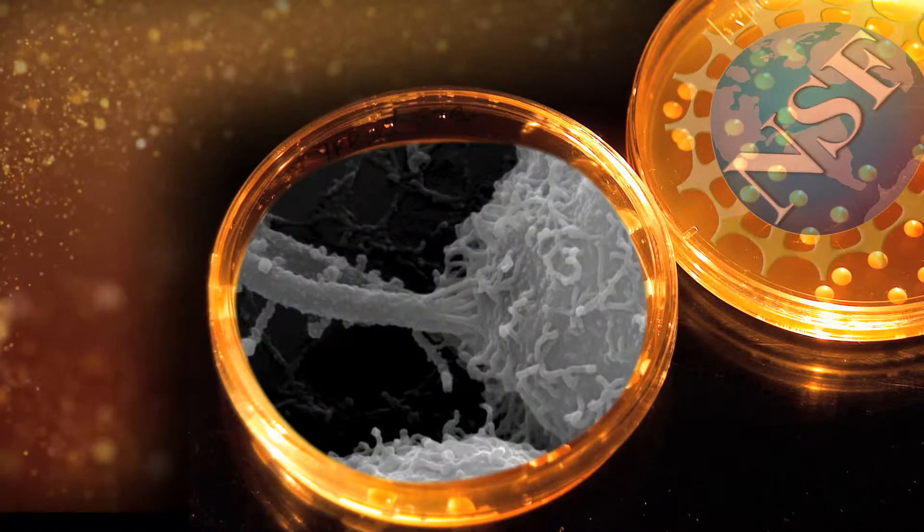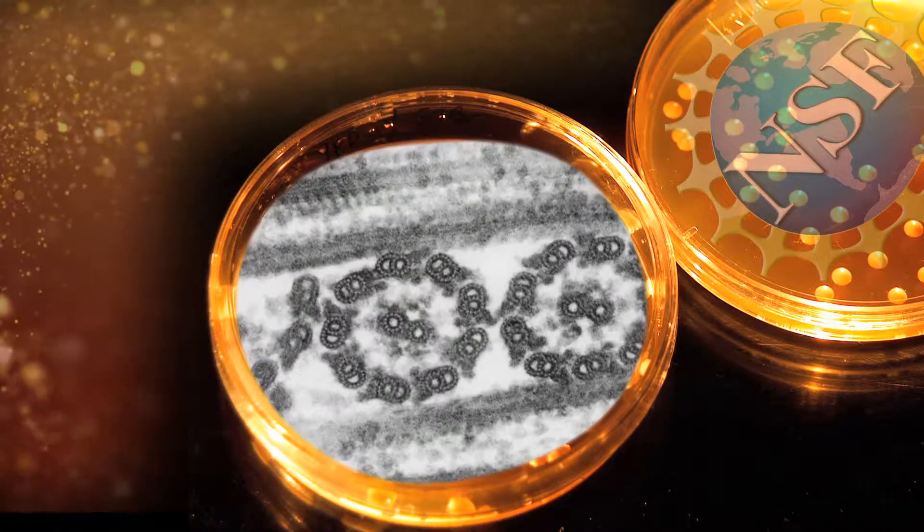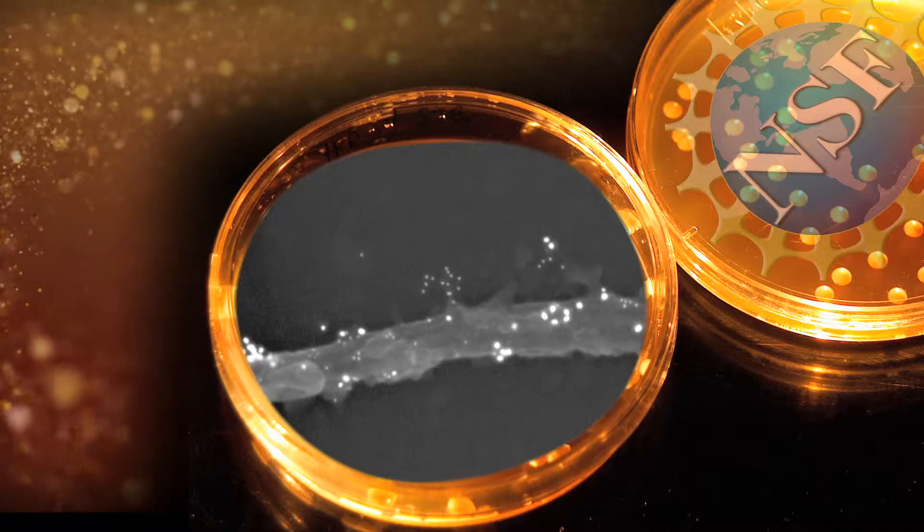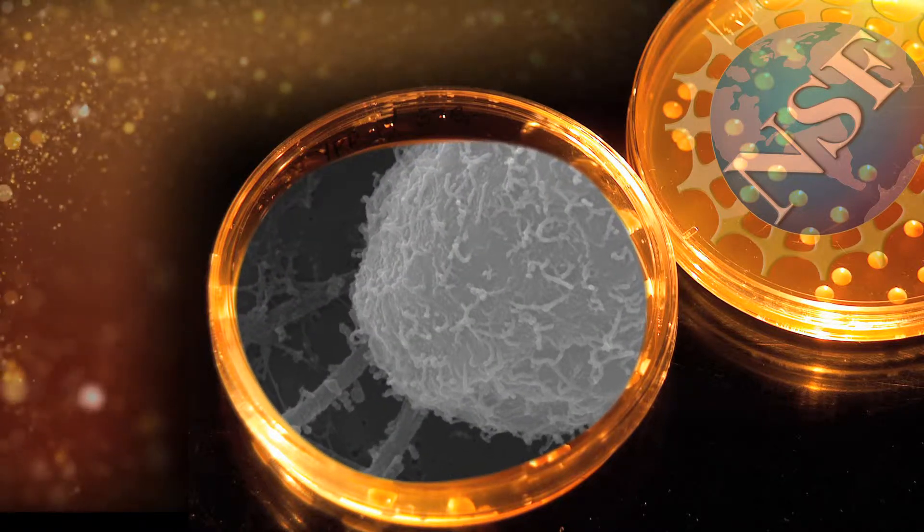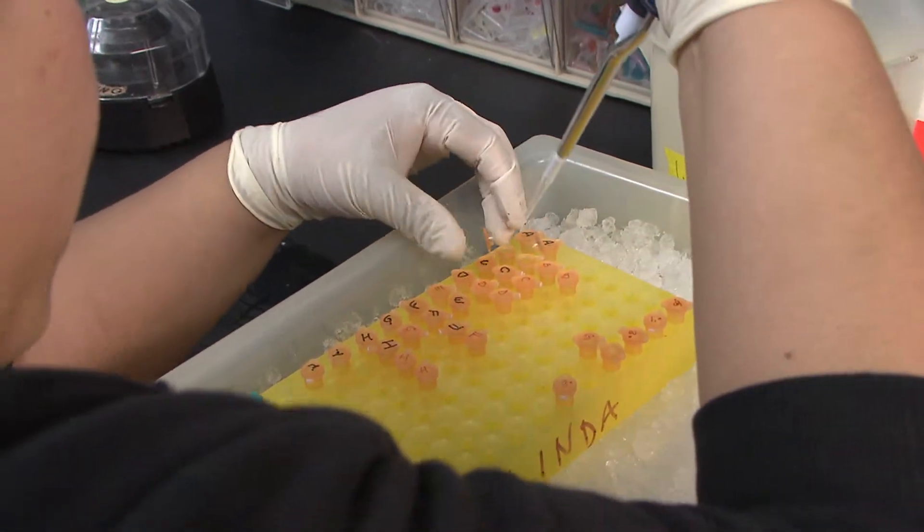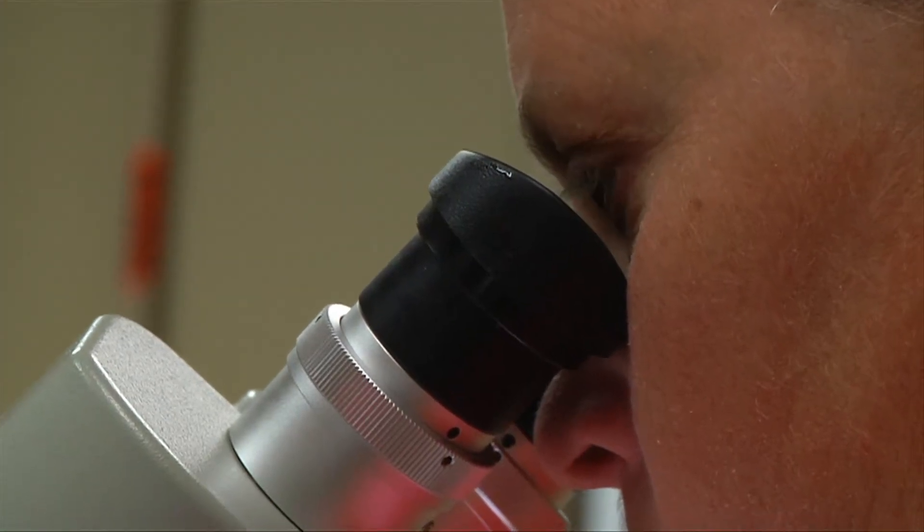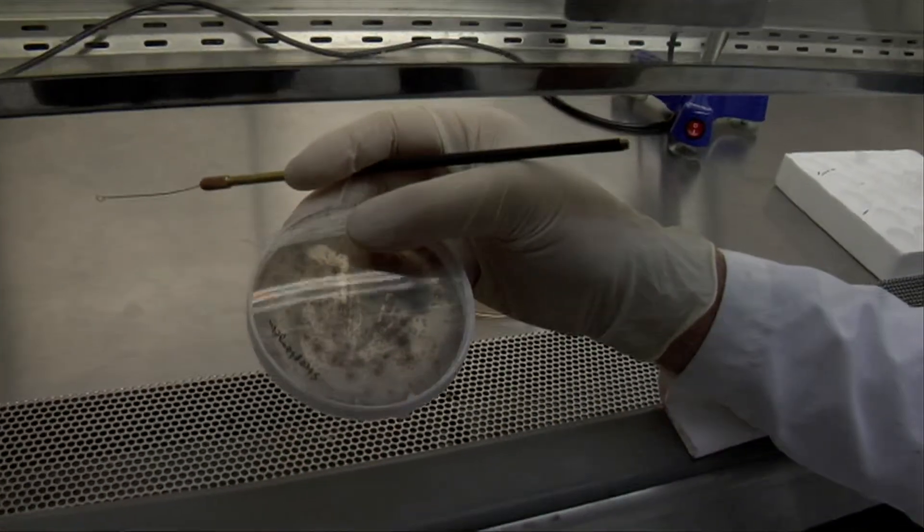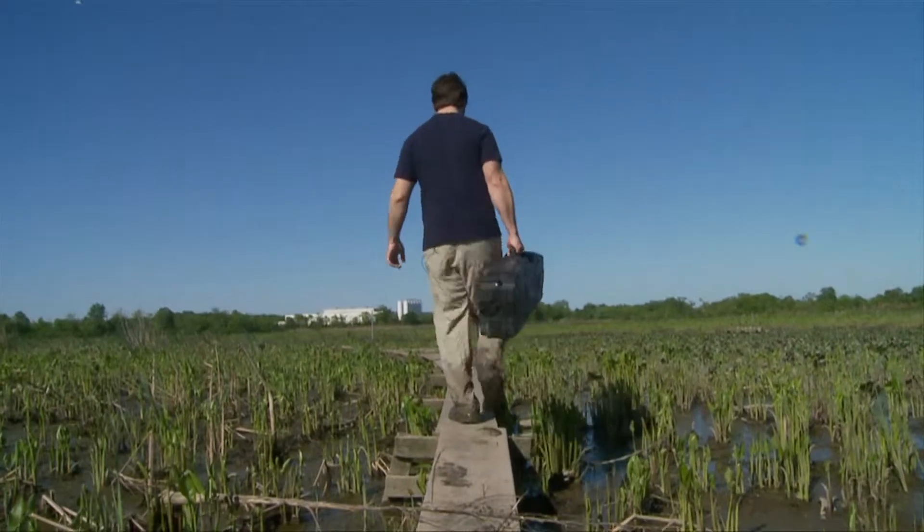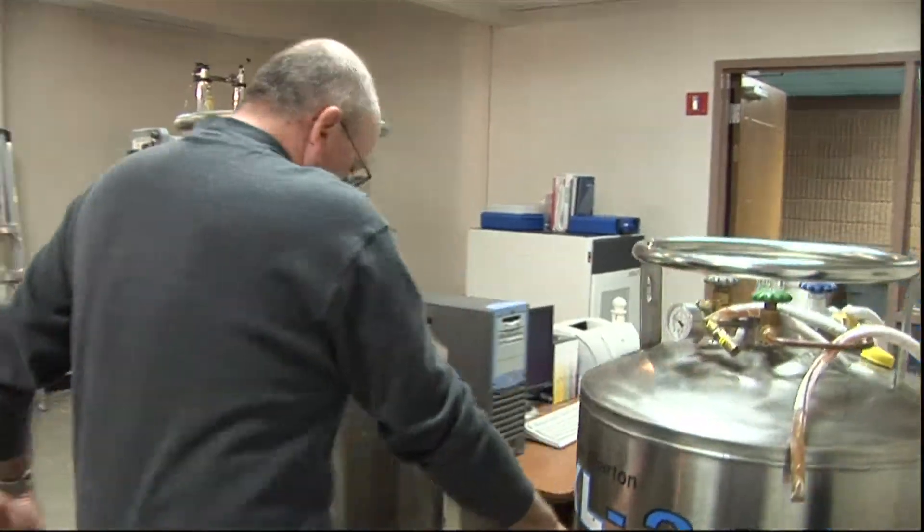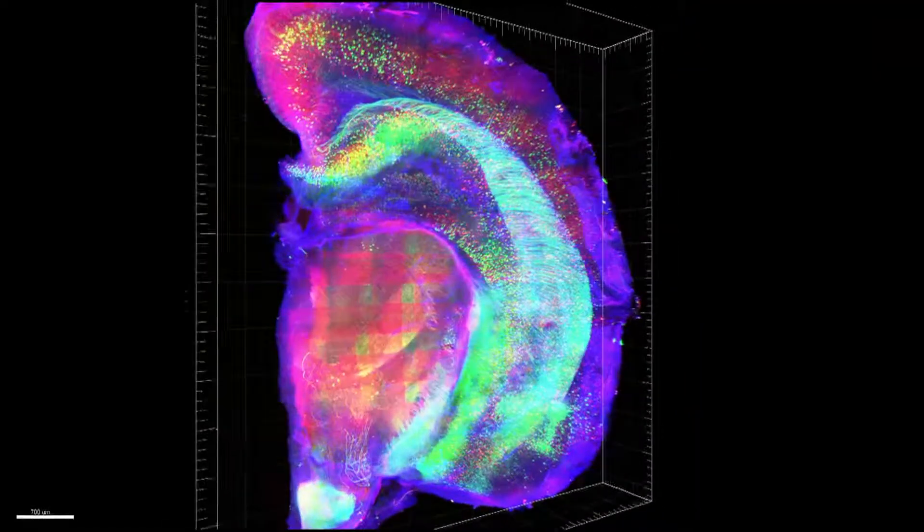The foundation for optogenetics was largely laid by many studies funded by the National Science Foundation on how the light sensitive proteins of microbes function. Studies not led by brain scientists, but by scientists who were driven by sheer curiosity about how simple organisms survive. Scientists who had no idea their work would ever help revolutionize the study of the brain.